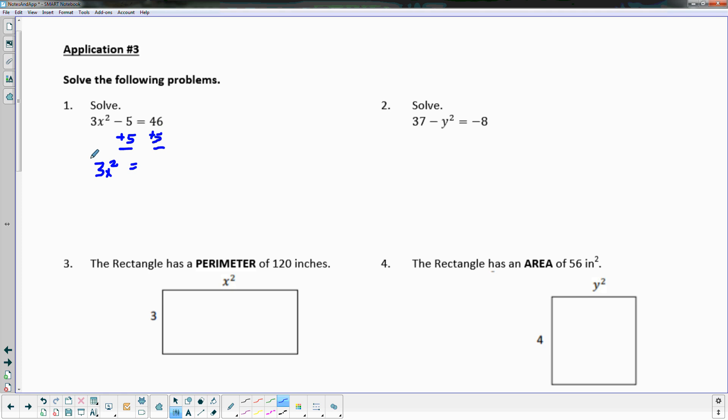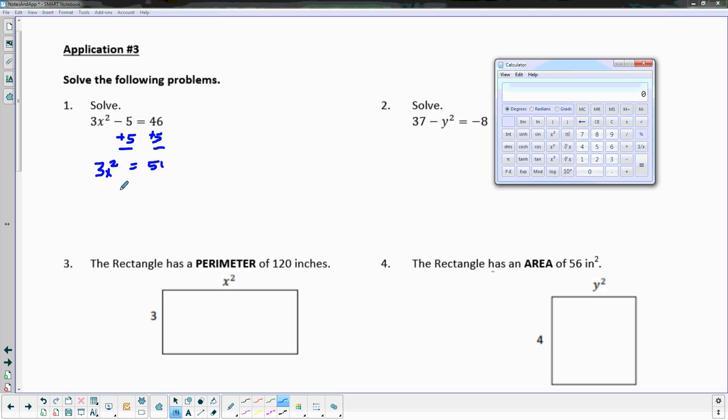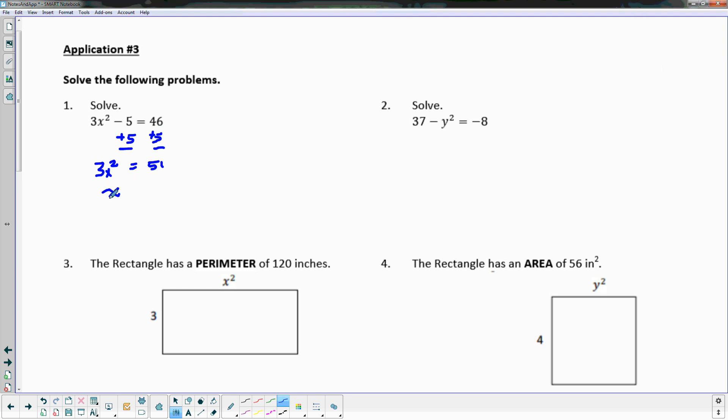Giving me 3x² equals 51. And what's that? When I take 51, let's see here, when I take 51 divided by 3, I get 17. So I'm already dividing by 3.